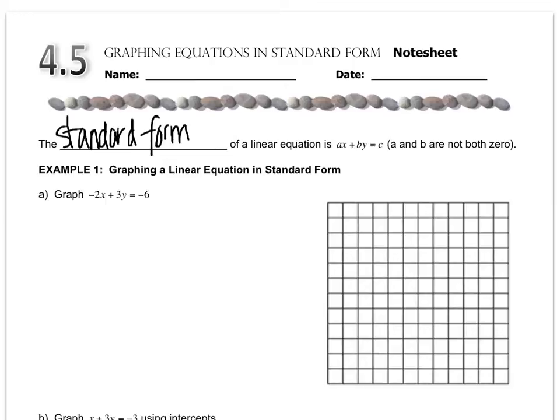So in letter A, example 1, that's what standard form would look like, where all the variables are on one side and the number is by itself, instead of the Y being by itself, the number is by itself.